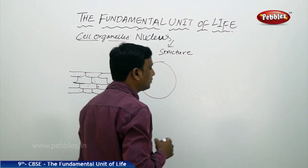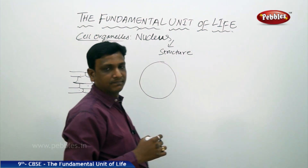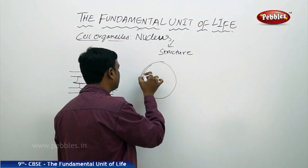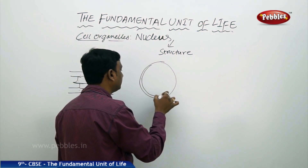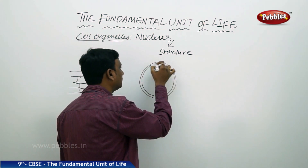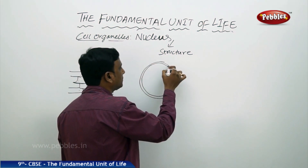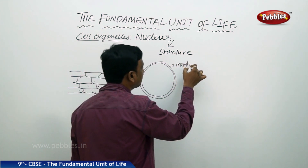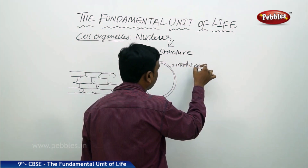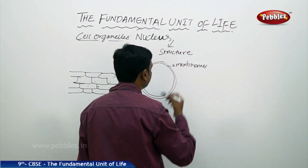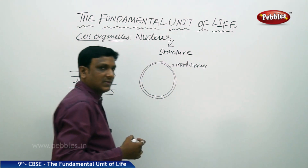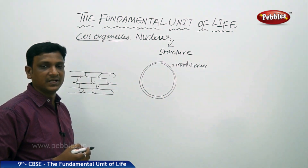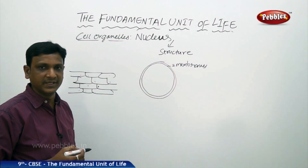The nucleus is a round dark body which has two membranes — an outer membrane and an inner membrane. These two membranes are covering the nucleus. The membrane is called the nuclear membrane: the inner nuclear membrane and the outer nuclear membrane.